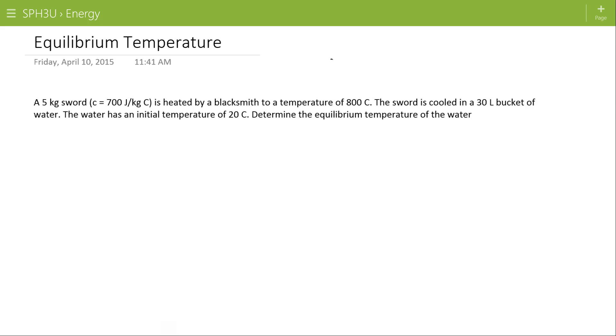So let's write out our given information. So for the sword, which I guess based on that specific heat capacity is something like steel, has a mass of five kilograms, a specific heat of 700 joules per kilogram C, and an initial temperature of 800 degrees C.